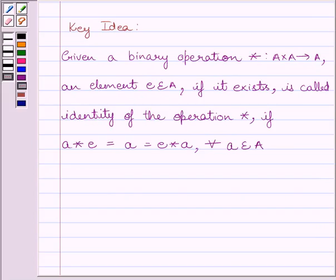First of all, let us understand the key idea to solve the given question. Given a binary operation star from A cross A to A, an element E belonging to A, if it exists, is called identity of the operation star if A star E equals A equals E star A for every A belonging to set A.